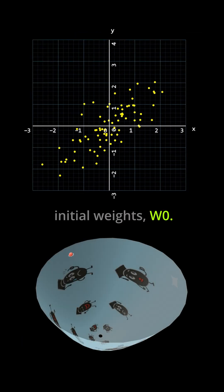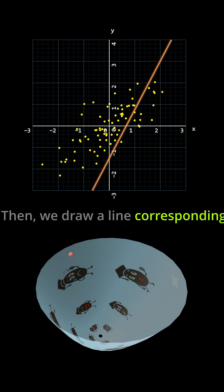First, we set the initial weights, W0. Then, we draw a line corresponding to W0, basically just an arbitrary starting line.